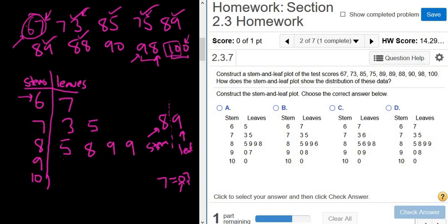And then for 90, for 9 rather, we have 90 and 98. And then for 100, for 10, we have 100, so just 0. So that's our stem and leaf graph.